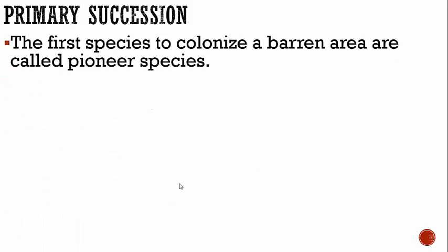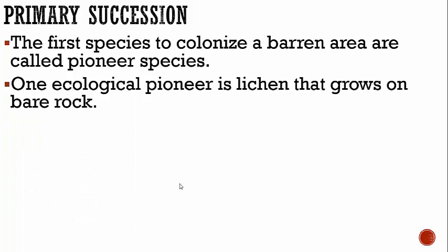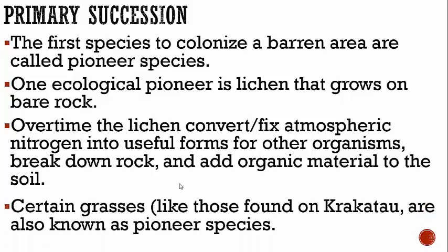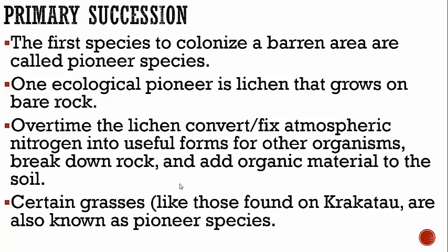Continuing with primary succession: the first species to colonize a barren area where there isn't life are called pioneer species. One ecological pioneer is lichen that grows on bare rock. Over time, the lichen convert or fix atmospheric nitrogen into useful forms for other organisms — they break down the rock and add organic material to the soil. Certain grasses like those found on Krakatoa are also known as pioneer species. They're called pioneers because they're the first ones there, which is also why it's called primary succession.